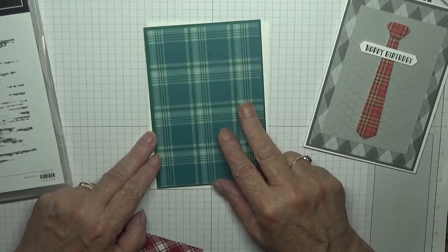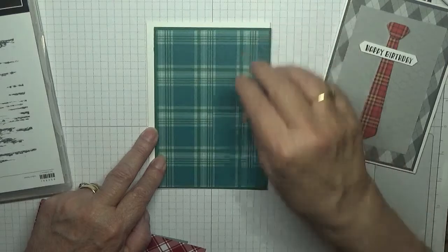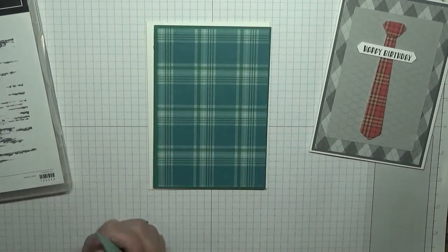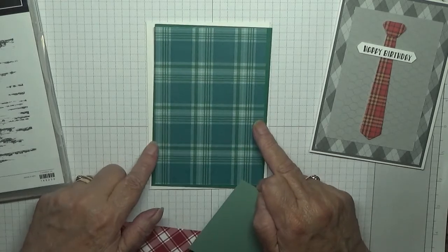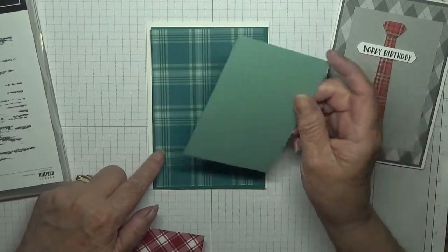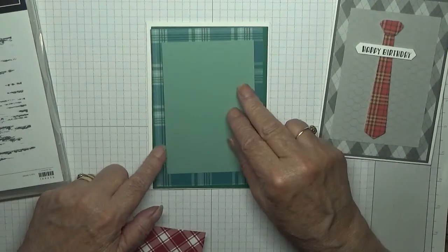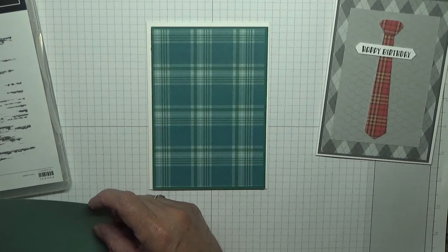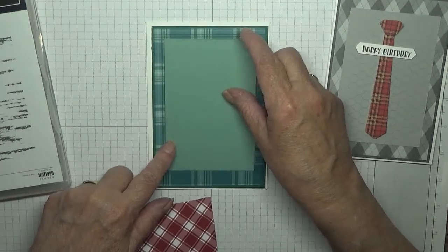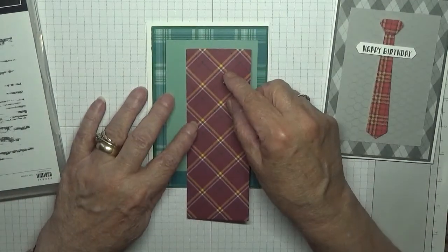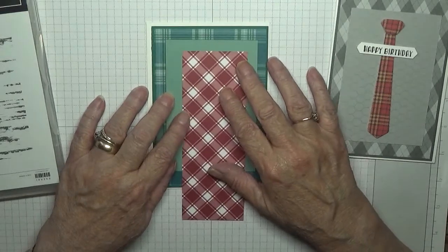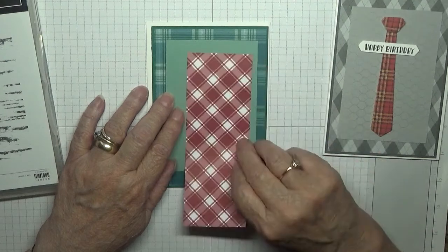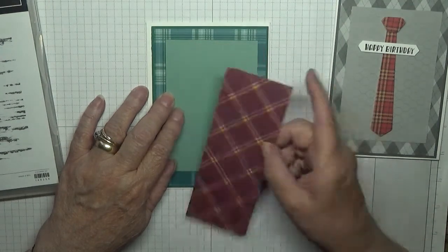The pack measures five and a half by three and three quarters. Then I have some mint macaron to go in the middle - this measures three inches by four and a half. And I have another piece of white. I don't know, we'll wait and see when the tie's cut out.